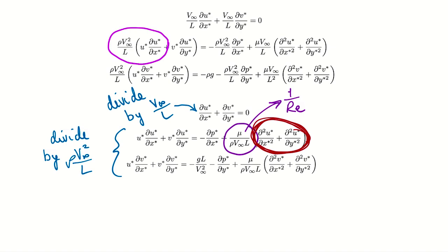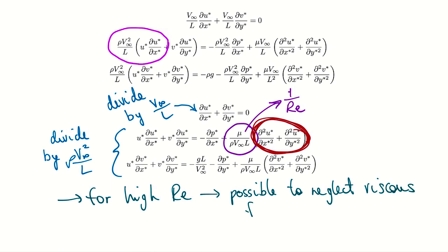Conversely, when Reynolds number is very small, that coefficient becomes large — the viscous term dominates and the other terms can be neglected. You can also multiply the whole equation by Reynolds number: then at low Reynolds number, the inertial terms become negligible. This is a beautiful mathematical justification for when we can and cannot neglect viscosity.